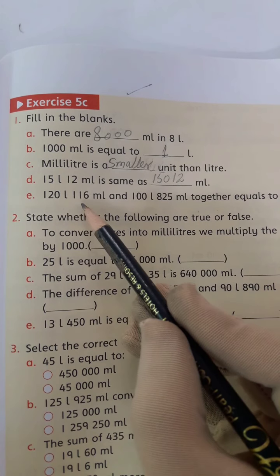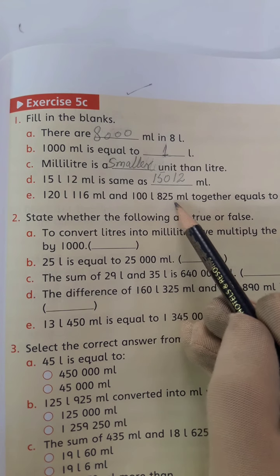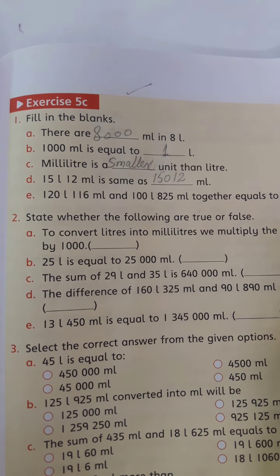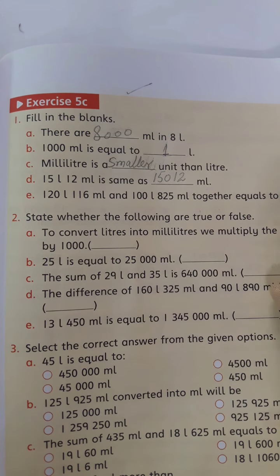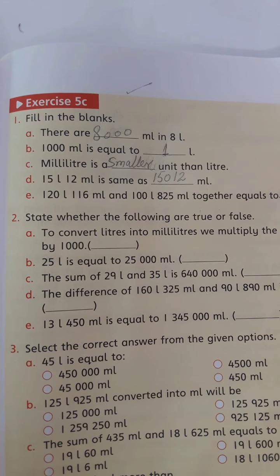Part D: 120 litres 116 millilitres and 100 litres 825 millilitres together. You have to add them, so the answer is 220 litres and 941 millilitres. Now question number 2.